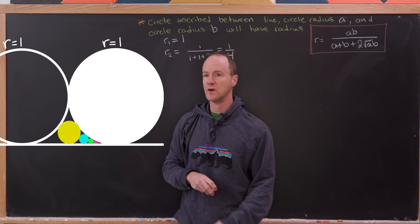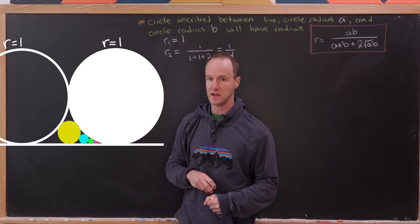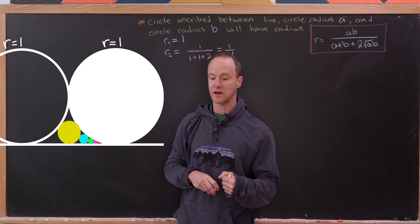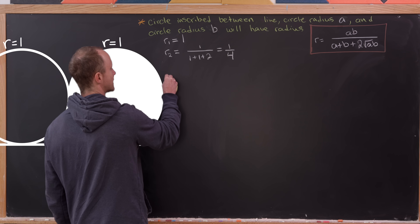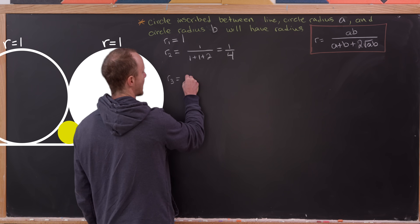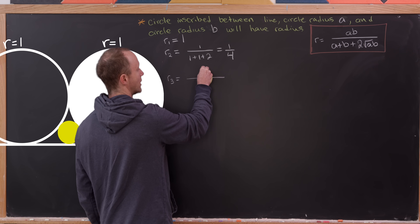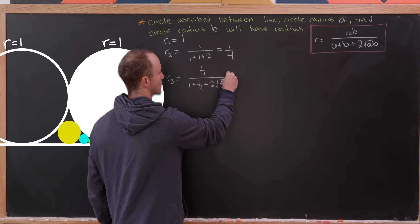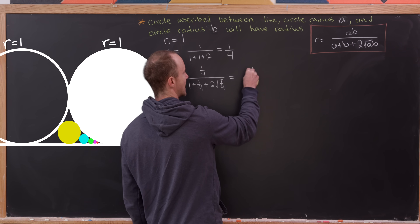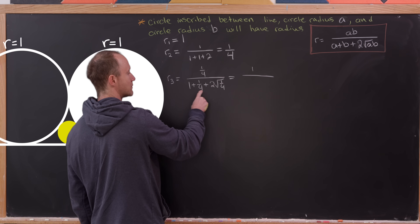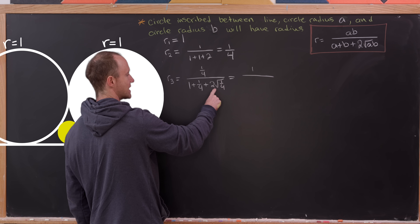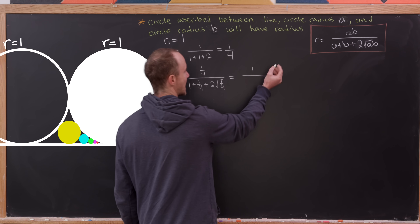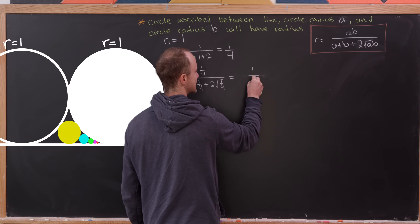Now the third circle is inscribed between the straight line, a circle of radius 1, and the circle of radius 1/4. Using our formula with A = 1/4 and B = 1 gives (1/4) / (1 + 1/4 + 2√(1/4)). Multiplying through by 4, the denominator becomes 4 + 1 + 4 = 9, so R₃ = 1/9.